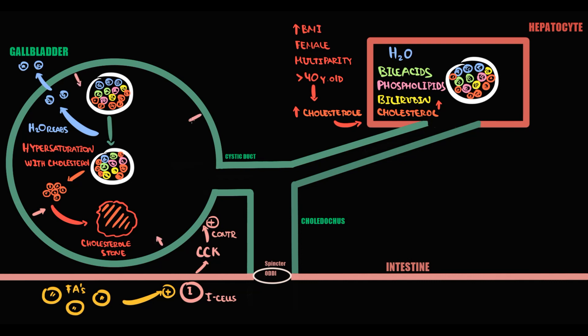By this gallbladder pushes bile together with cholesterol stone into the cystic duct. Recall that bile flow from the gallbladder into the common bile duct equals pressure inside the gallbladder minus pressure inside the common bile duct divided by resistance between them. With contraction of the gallbladder the pressure inside increases, and as a result flow increases. By contraction gallbladder pushes bile through the cystic duct into the common bile duct.